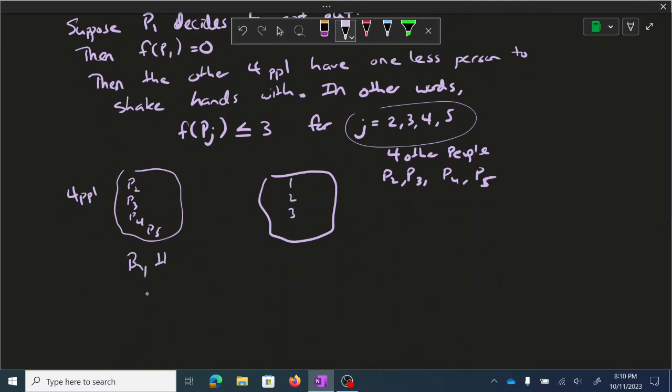So by the pigeonhole principle, there exists, remember this is, well, there exists a number of handshakes.